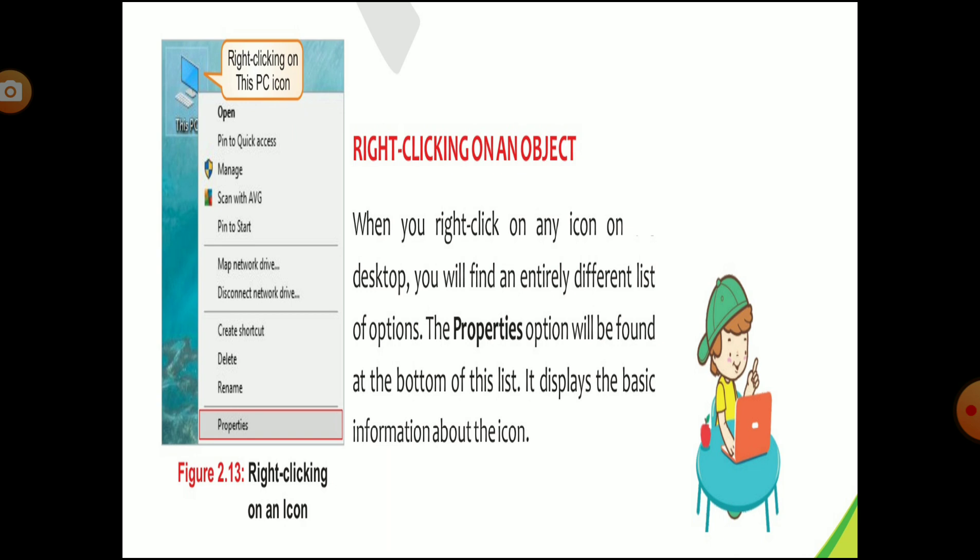The properties option shows information such as storage space — for example for images or videos, how much space is used and how much is not used. You can also change the picture of its image. This is all types of basic information.